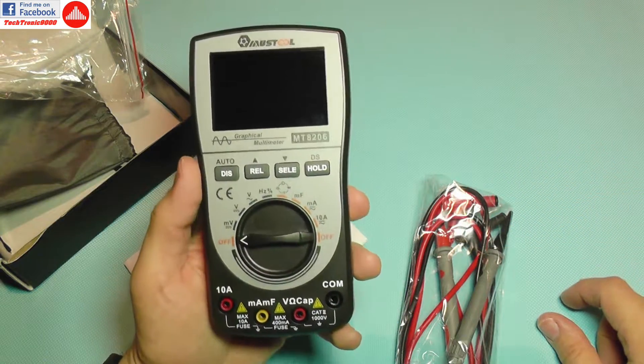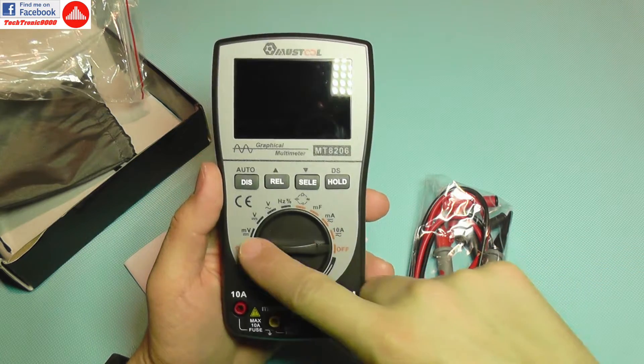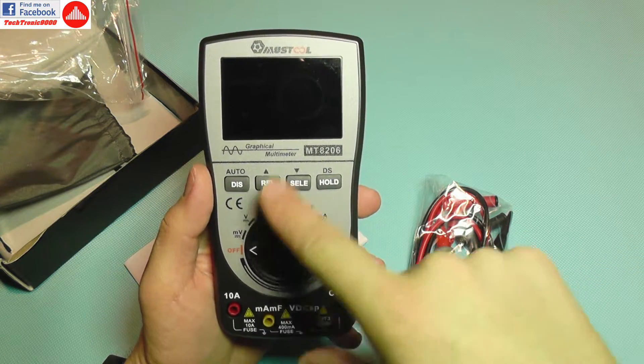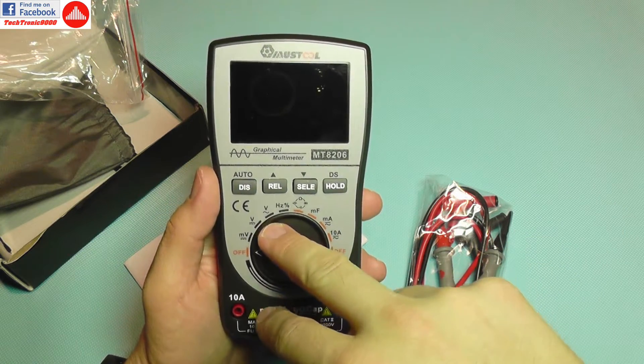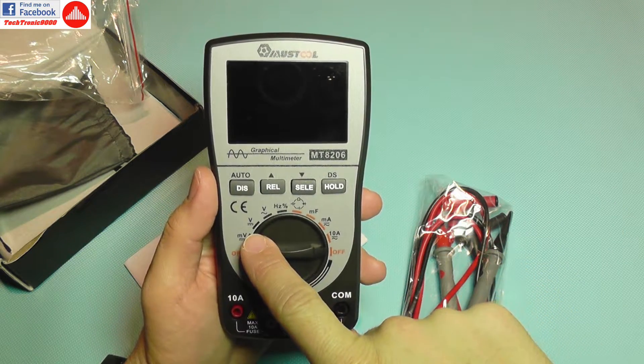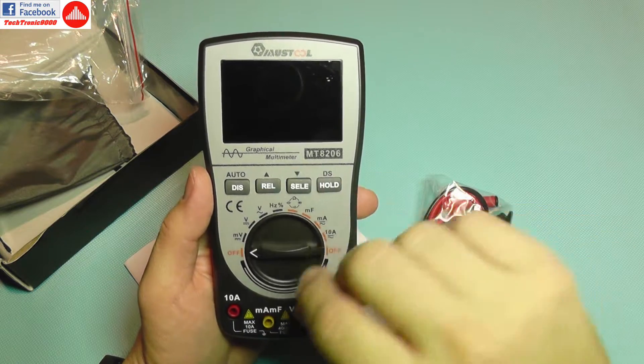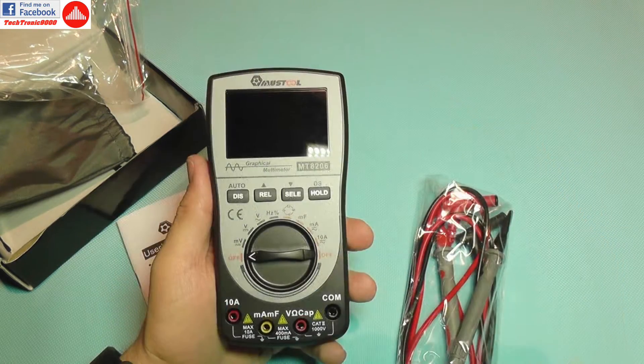It makes things a lot easier than regular devices because you don't have to set the range for the measurement. It's auto range, so you just select what you want to measure such as volts on DC current or AC current and that's it.